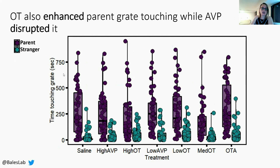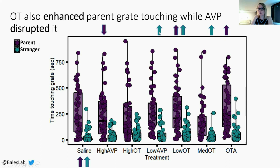In addition to scoring where subjects were, we also scored time spent touching the grate of their parents in purple and strangers in aqua, with treatments on the x-axis compared to the saline group. Low oxytocin and the oxytocin antagonist increased parent-grate touching time, while high vasopressin treatments decreased it. Interestingly, low vasopressin treatments increased time spent touching the grate of the strangers, as did low and medium oxytocin. Together, these findings complement our preference zone findings, with oxytocin enhancing and vasopressin disrupting species-typical proximity seeking with the parents.